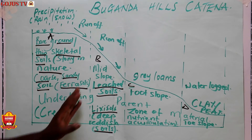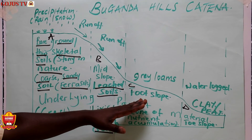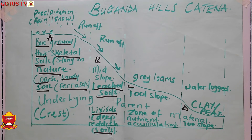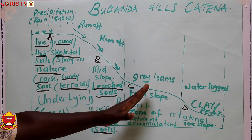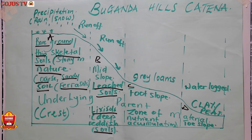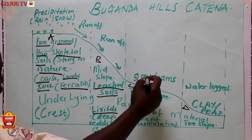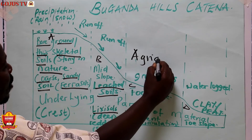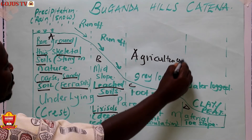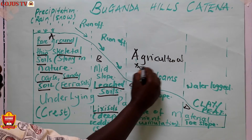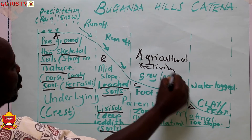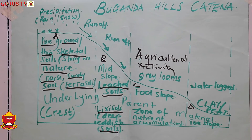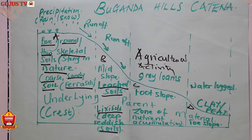Then we go to the foot slope. The foot slope is the more gentle part of that hill slope. Here we get gray loams, and in this foot slope we normally find a lot of agricultural activity because the soils have enough water and are well drained.